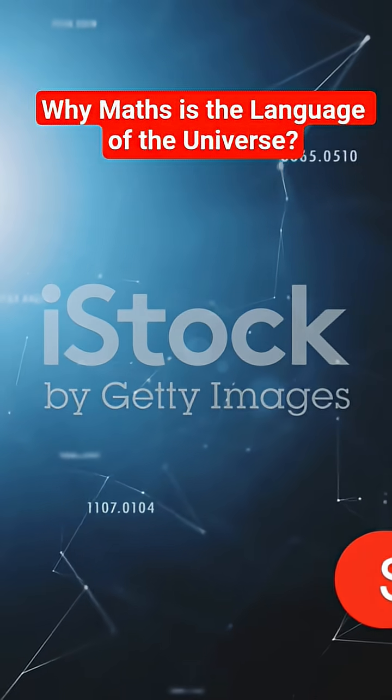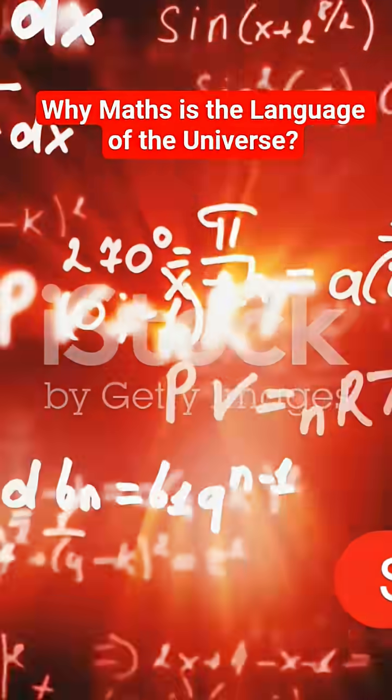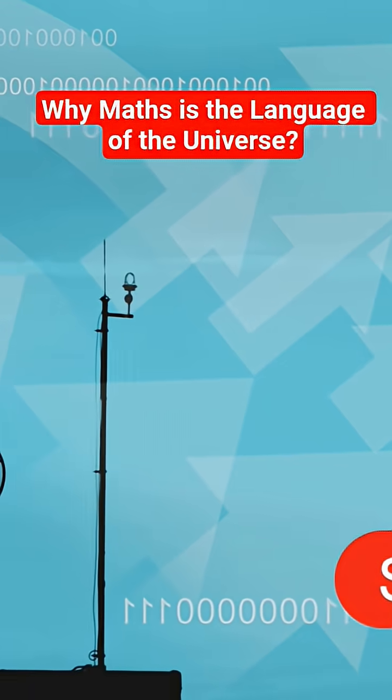If intelligent aliens exist, how will we talk to them? Not with English or Chinese, but with math. Why? Because 2 plus 2 equals 4 everywhere in the universe. Math is the universal translator.